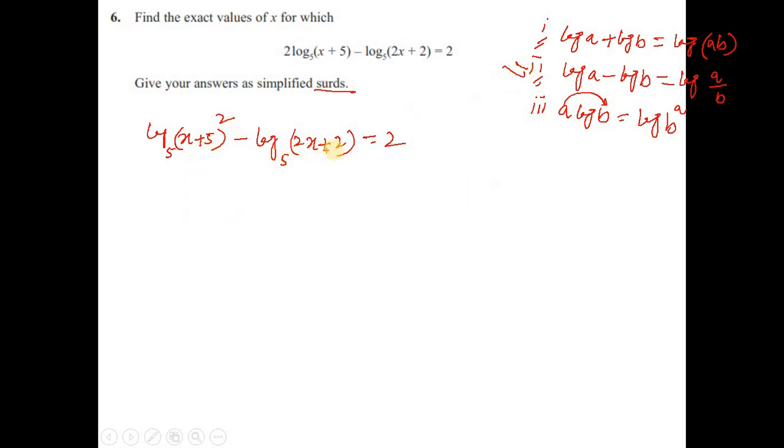And then if you see that you have two logs and a minus in between, you can apply the second rule. You can write (x+5)² and (2x+2) as a quotient in a single log: log₅[(x+5)²/(2x+2)] = 2.